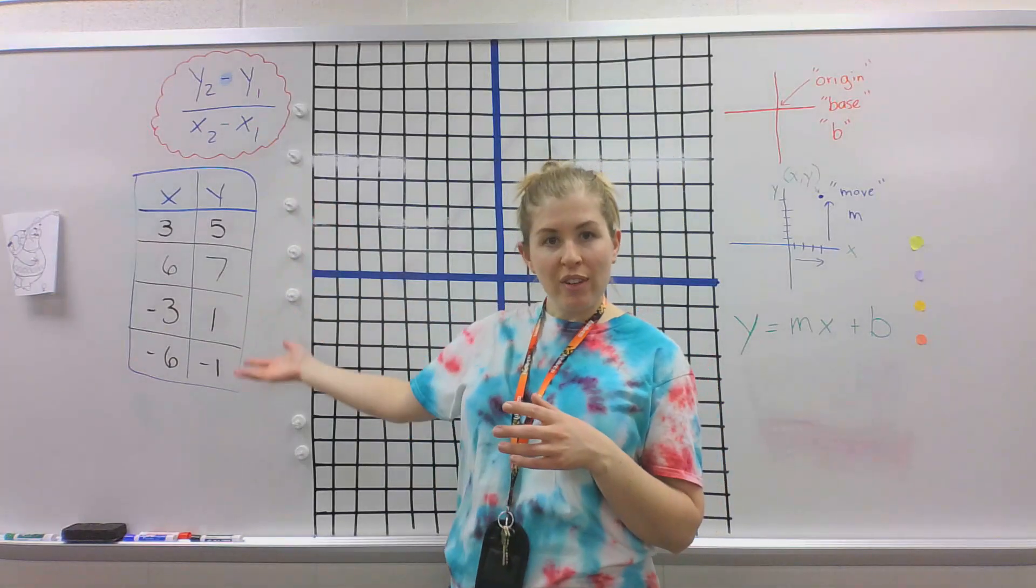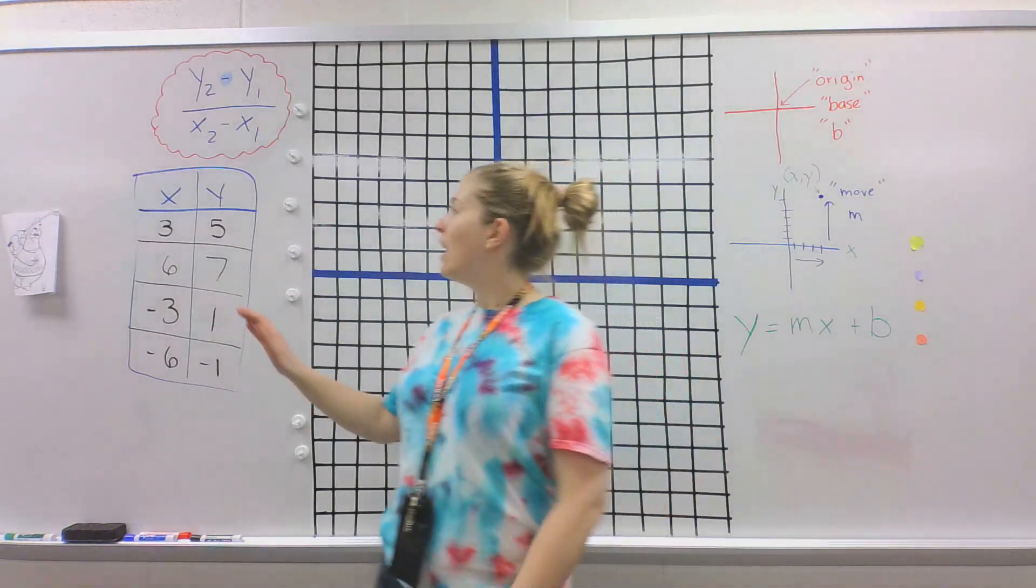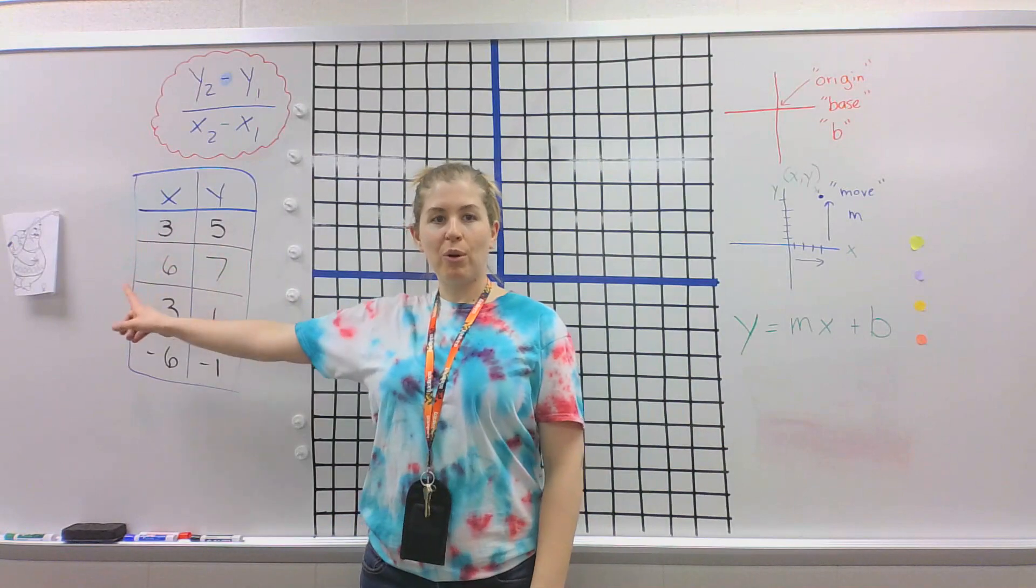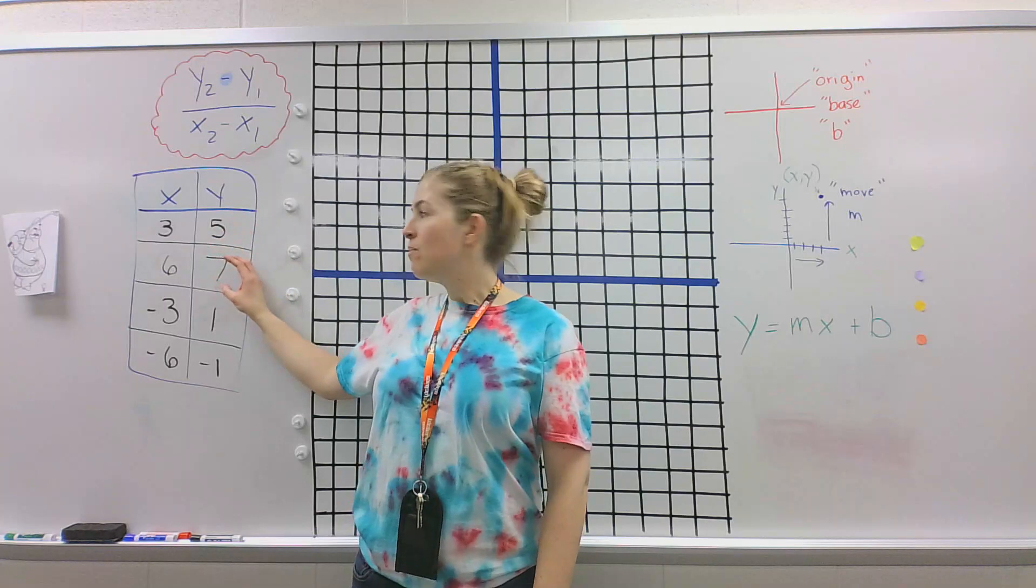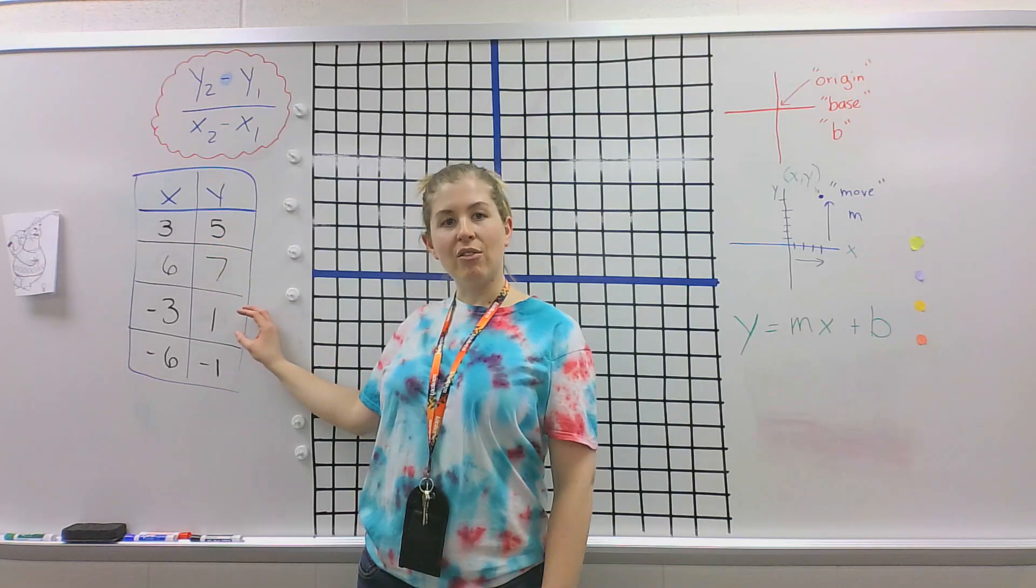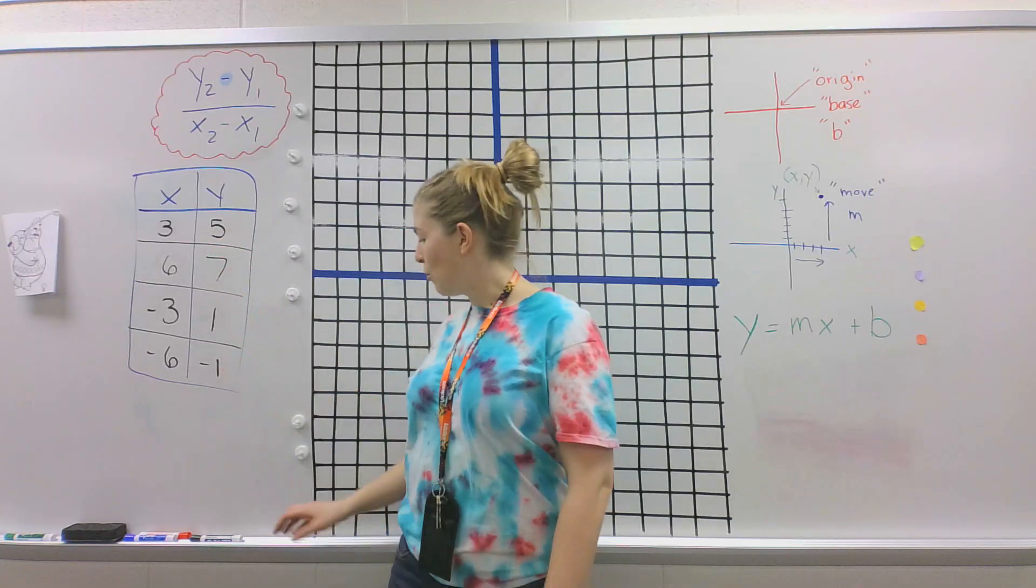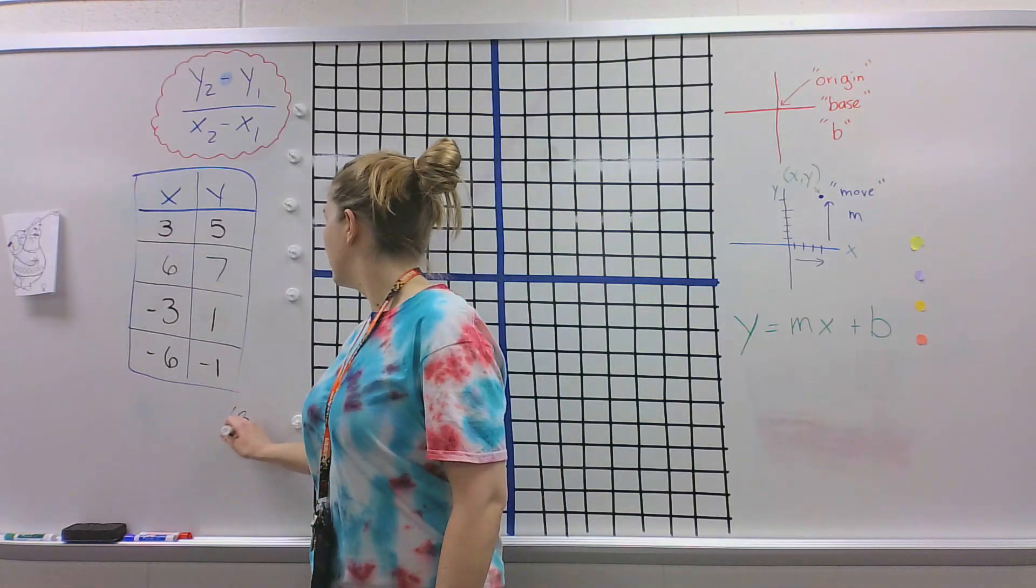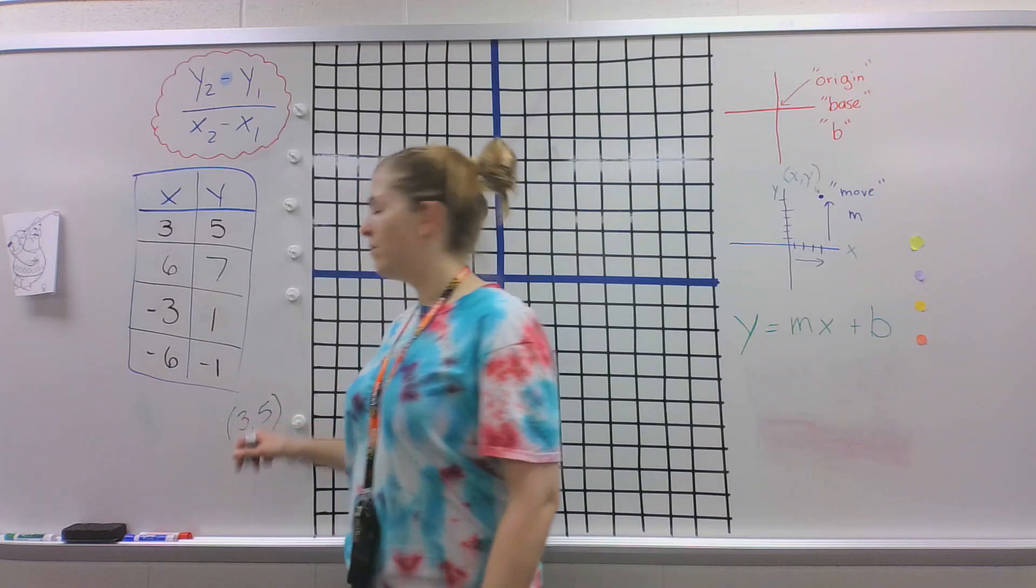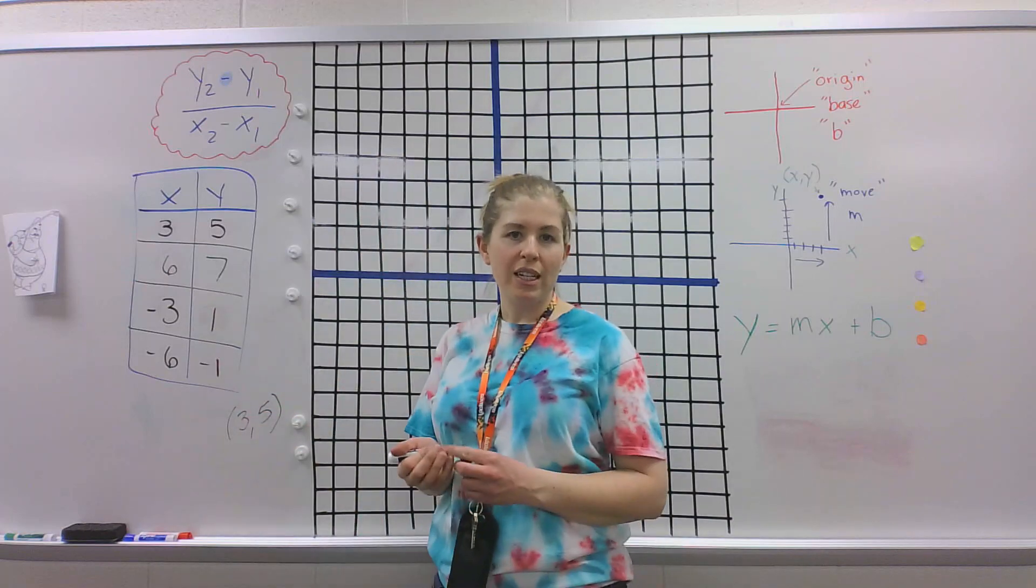So we have our table over here, x, y. So the way the points read is x comma y. So this would be 3 comma 5, 6 comma 7, negative 3 comma 1, and negative 6 comma negative 1. This would look like this as well. They're the same thing, just sometimes you see it as a table.